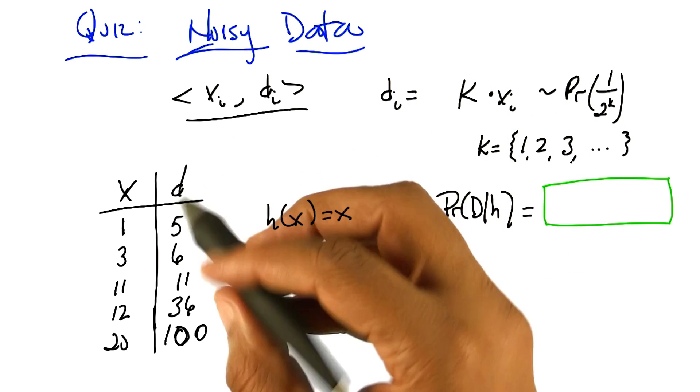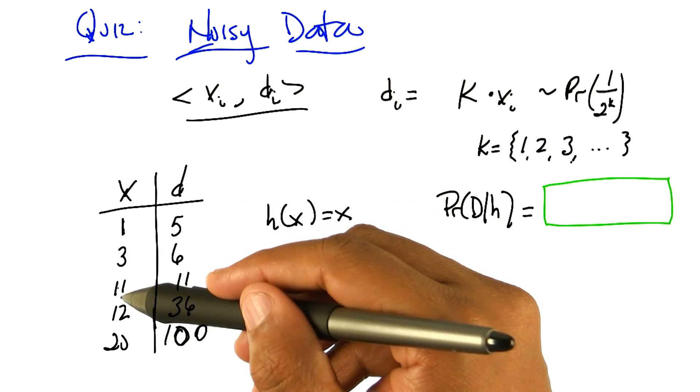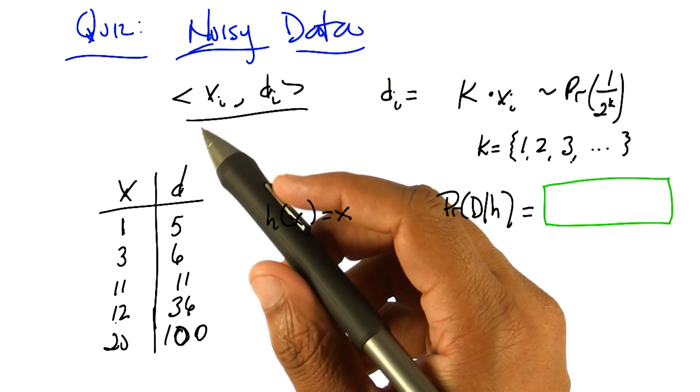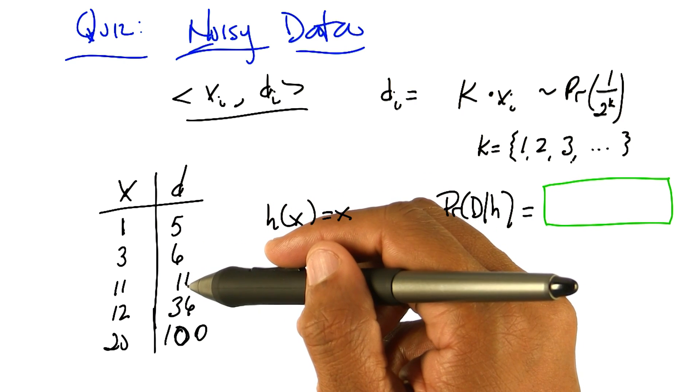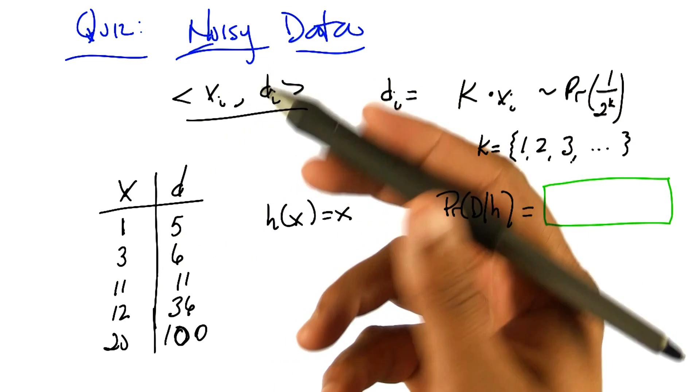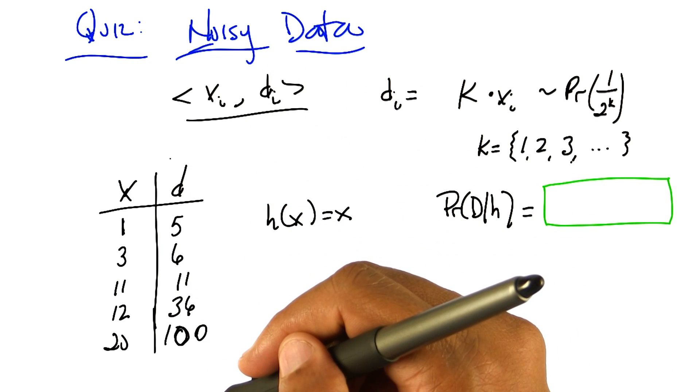Okay. So, here's a set of data that you've got. Here's a bunch of x's that make up our training data. 1, 3, 11, 12, and 20. For some reason they're in ascending order. And the labels that go along with them are 5, 6, 11, 36, and 100. All right.